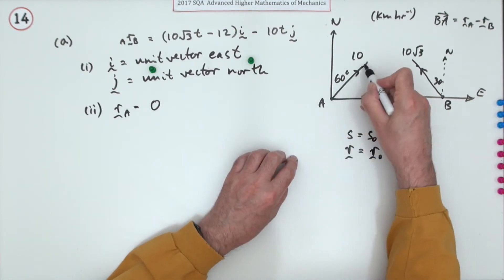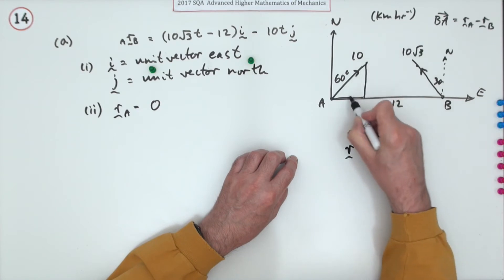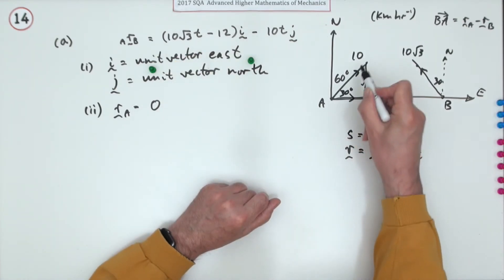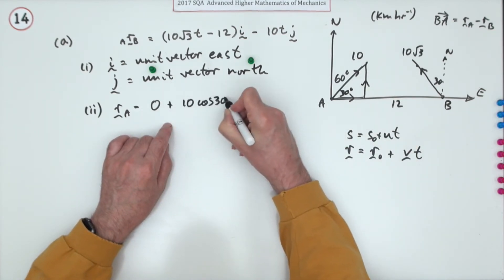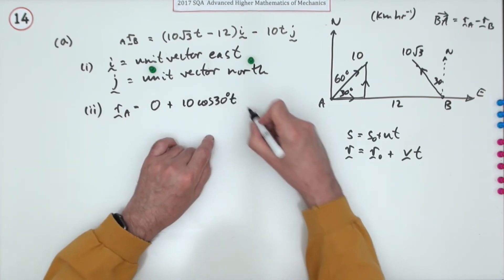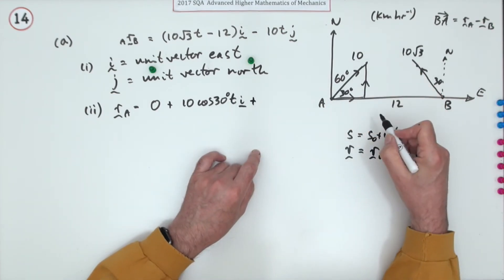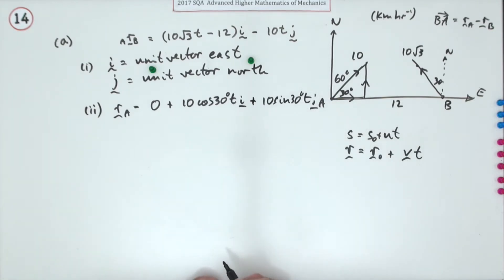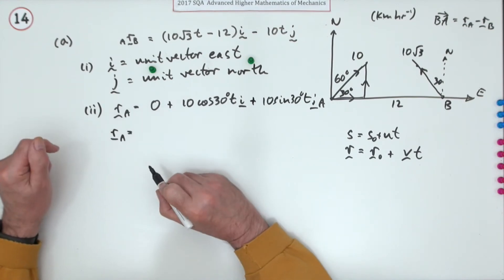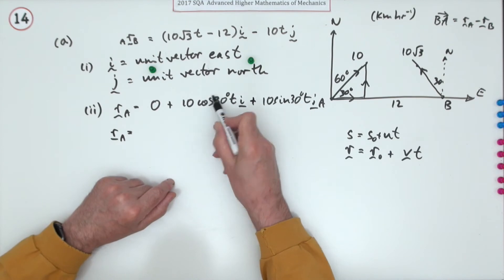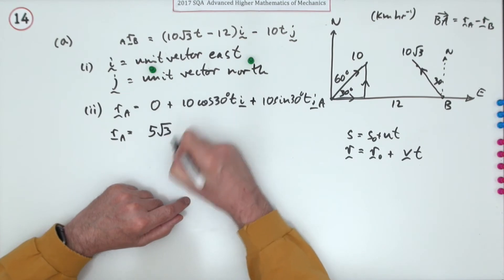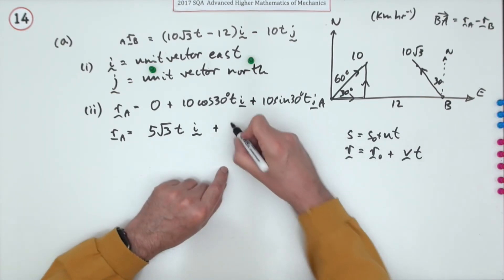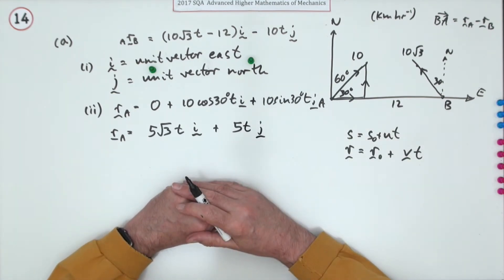Boat A's velocity has two components. Drawing a 30-degree triangle: the horizontal component in the i direction is 10 cos 30, giving 10 × (√3/2) = 5√3, so 5√3·t in the i direction. The vertical component in the j direction is 10 sin 30 = 10 × (1/2) = 5, giving 5t in the j direction. So rA = 5√3·t i + 5t j.